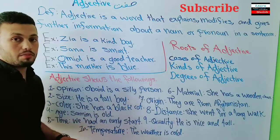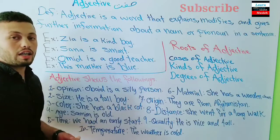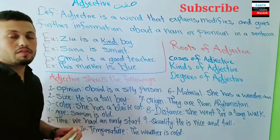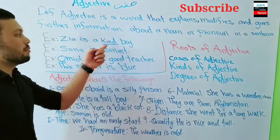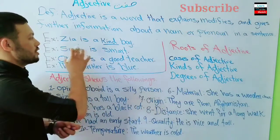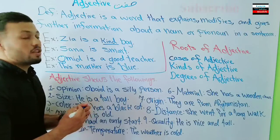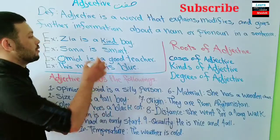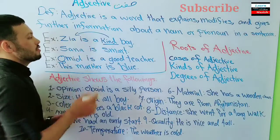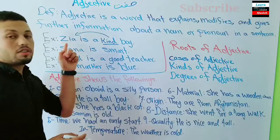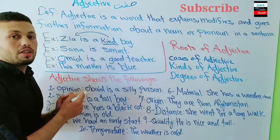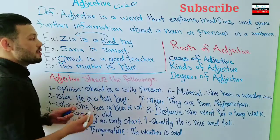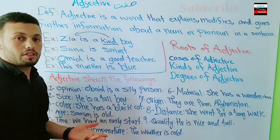For example: 'Ziya is a kind boy.' Here, 'kind' is the adjective. It modifies the noun 'boy' and tells us more about Ziya. So 'kind' is the adjective in this sentence.